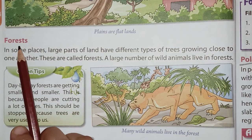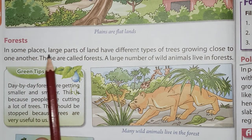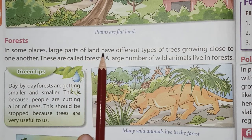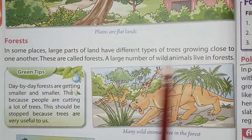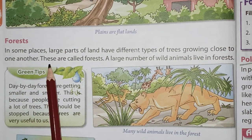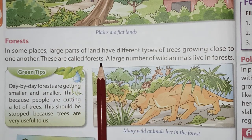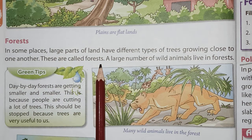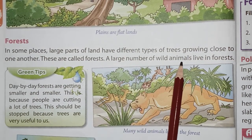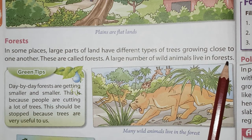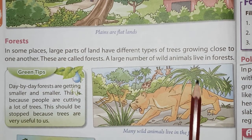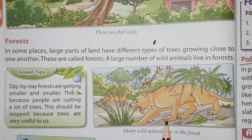The next is forest. In some places, large parts of land have different types of trees growing close to one another. These are called forests. A large number of wild animals live in forests — tigers, lions, giraffes, etc.